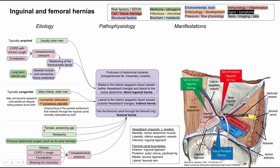Although femoral hernias are more common in females, they also happen in men. One predisposing factor in men is BPH. If you have BPH, you have a structural blocking of your urethra, which requires you to strain to urinate, which can increase your intra-abdominal pressure and cause a femoral hernia.